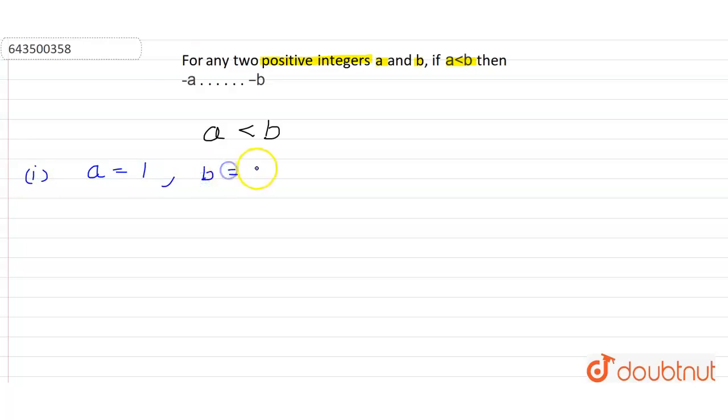So 1 is lesser than 2 definitely, but minus 1 is lesser than minus 2 or greater than? Definitely it's greater than minus 2. Let's check it out one more example.